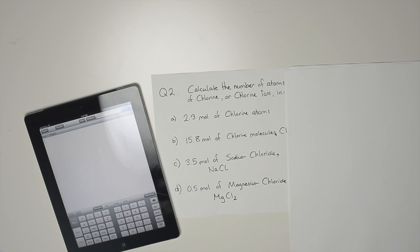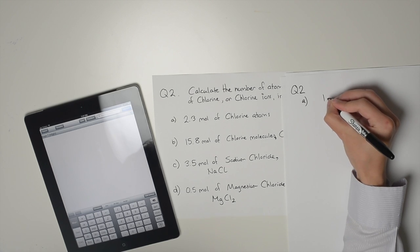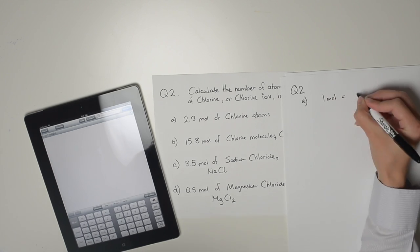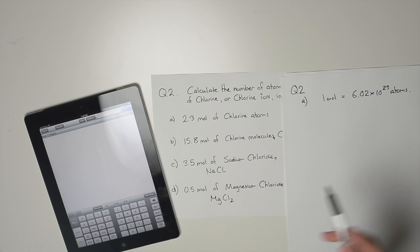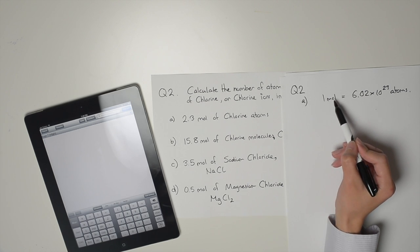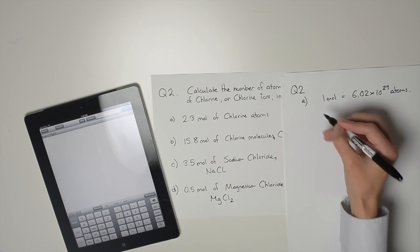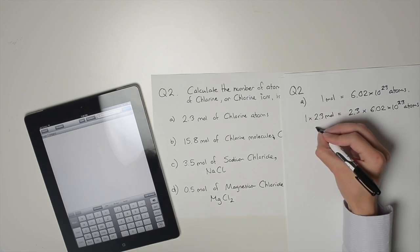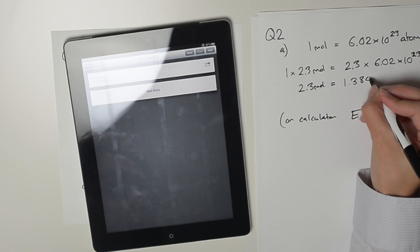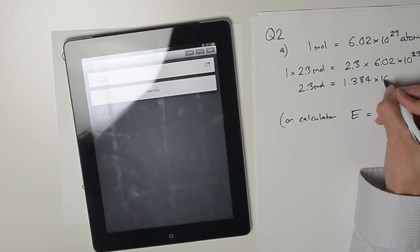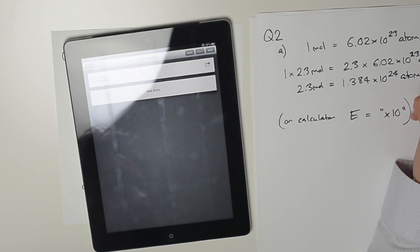But I like to use the following method instead. By definition, one mole equals 6.02 times 10 to the 23. Therefore, if we've got 2.3 moles, it's just 2.3 times bigger than this number. So you multiply both sides by 2.3. Punching that into the calculator, I get 1.384 times 10 to the power of 24 atoms.